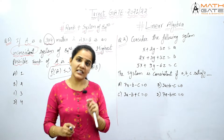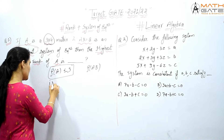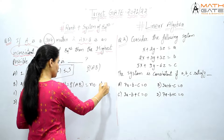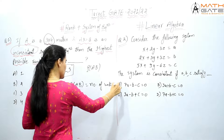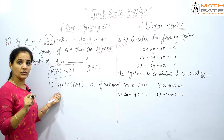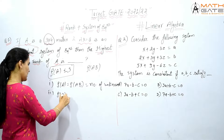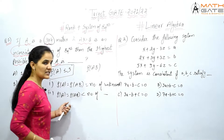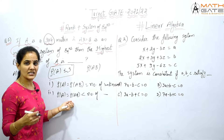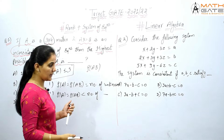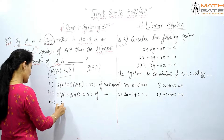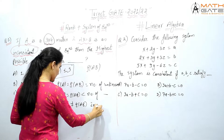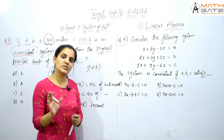We know that in a linear system of equations, any system is consistent if rank of A equals rank of augmented matrix AB, which equals the number of unknowns — giving a unique solution. Second case: rank of A equals rank of AB, less than the number of unknowns — consistent with infinite solutions. But if rank of A is not equal to rank of AB, then the system is inconsistent with no solution.